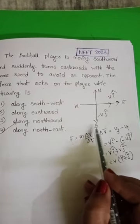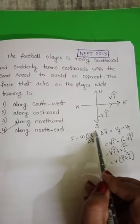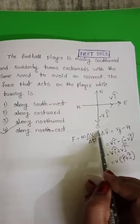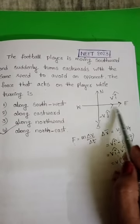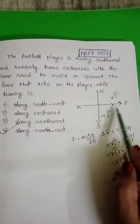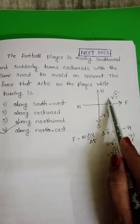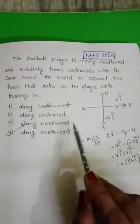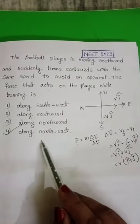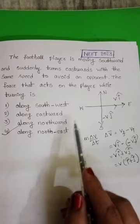Initially, the direction of the player is along the southward direction. After that, the direction of the player changes to the eastward direction with constant speed. Here we have to find out the force acting on the player.